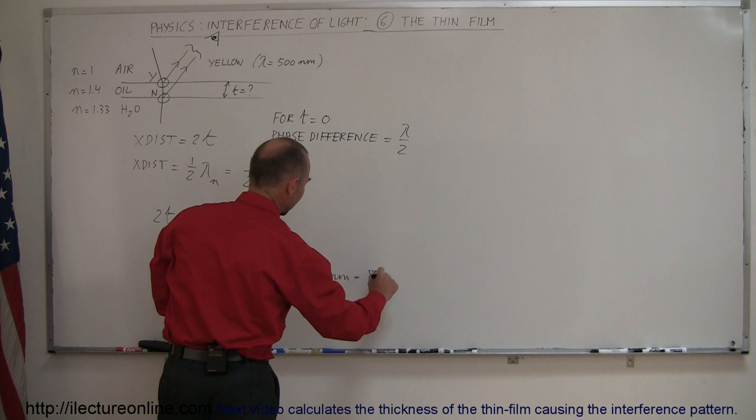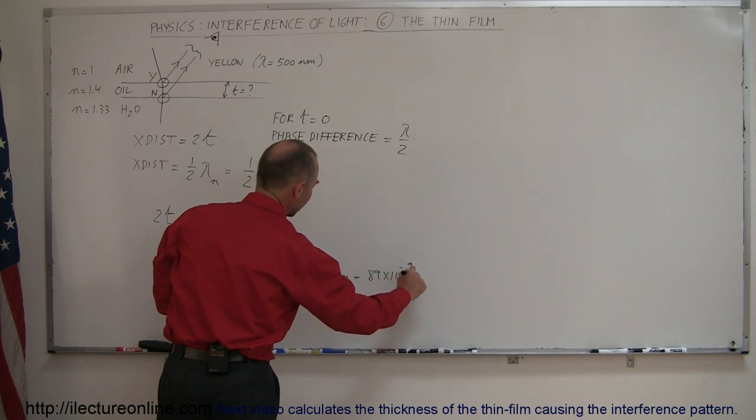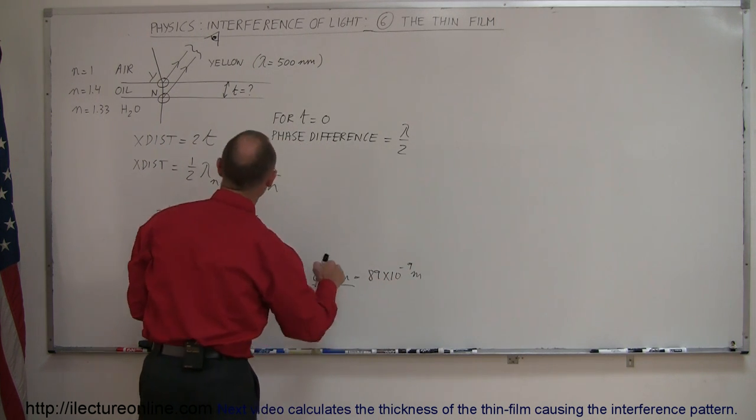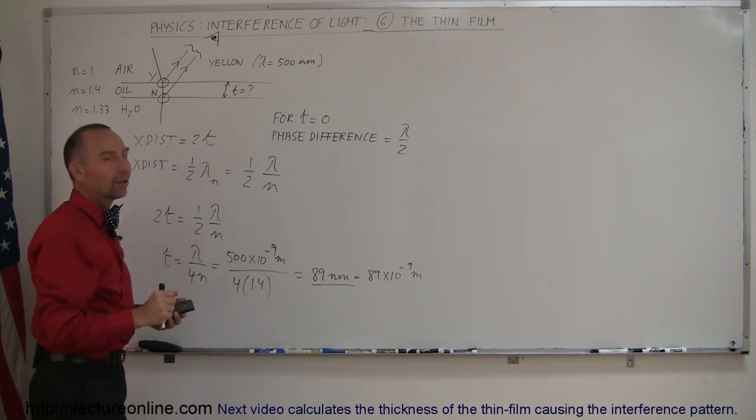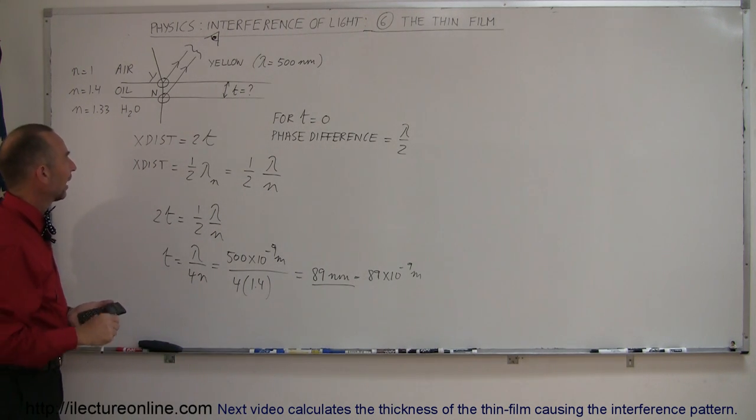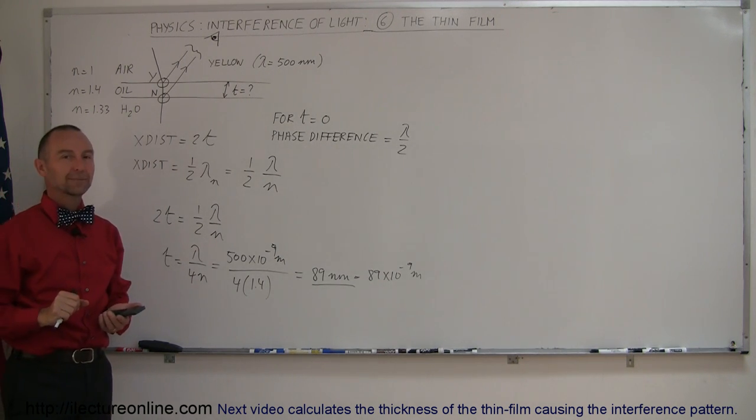And we have a thickness of 89 nanometers, which is of course 89 times 10 to the minus 9 meters. So that's the thickness of the oil right at the spot where the observer is looking, and that causes yellow light to be reflected and not transmitted into the water. And that's how you do a thin film problem like that.